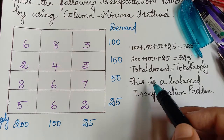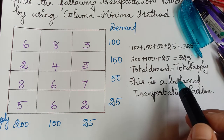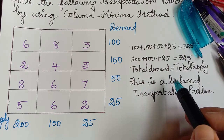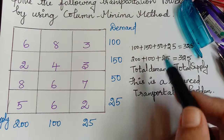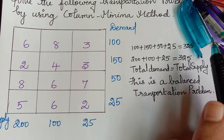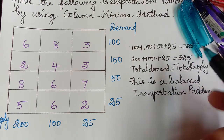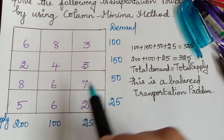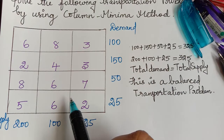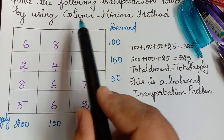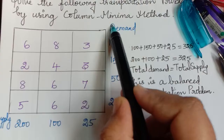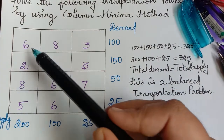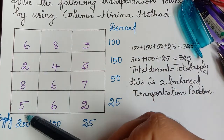If the problem were unbalanced, we would need to balance it first and then solve it, which we will learn in upcoming videos. Since the problem is balanced, we can start making the allocation. The method we are going to adopt is column minima method, so first we consider the first column.